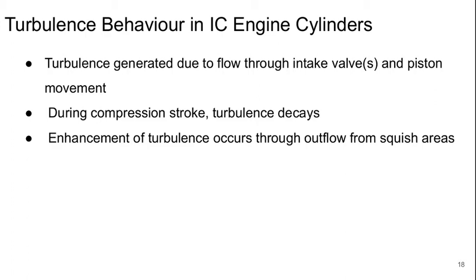Let's talk about the behavior of turbulence in IC engine cylinders. Turbulence is generated due to flow through the intake valves and the movement of the piston. During the compression stroke, though, the turbulence decays — when you compress, you decrease the maximum possible size of turbulent eddies, which rapidly forces turbulence to decay. One of the reasons we use squish areas is to enhance turbulence, because when the flow comes back out of that squished region, it generates turbulence similar to what happens when flow comes in through the valves.